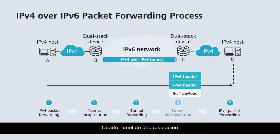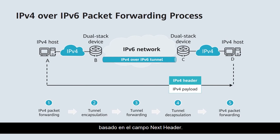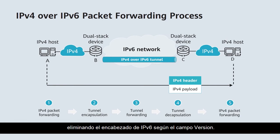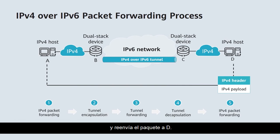Fourth, tunnel decapsulation: Upon receipt of the IPv6 packet, C discovers the destination address is its own and determines the original packet is an IPv4 packet based on the next header field. It then decapsulates the packet by removing the IPv6 header based on the version field. Fifth, IPv4 packet forwarding: C searches its IPv4 routing table for an entry matching the destination address and forwards the packet to D.